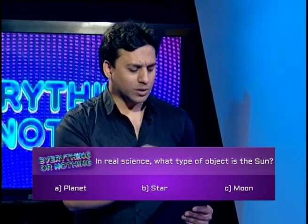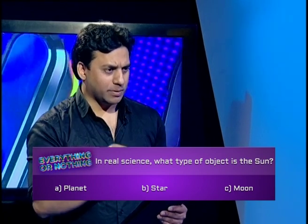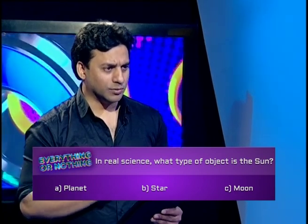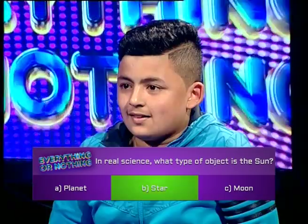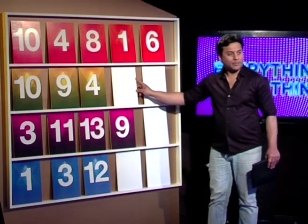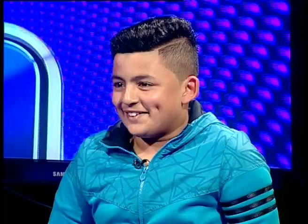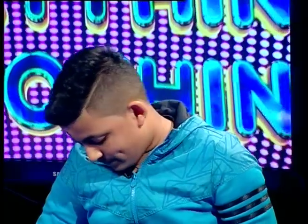Sorry Wasim. Yes sir? Changing. In real science, what type of object is the sun? Is it A, planet. B, star. C, moon? B, star. Correct! Next card is higher or lower? Higher. And 8. Bad luck.